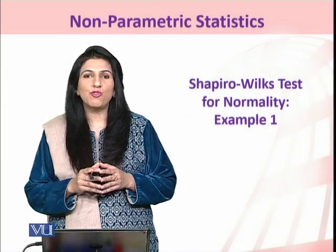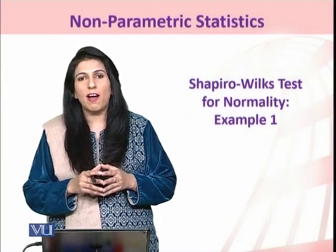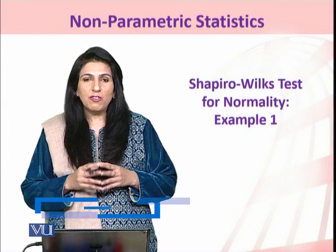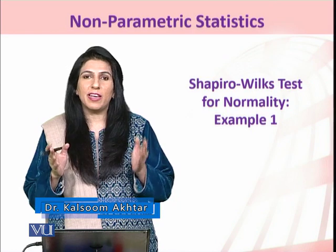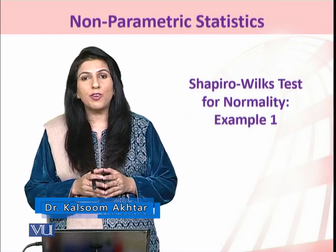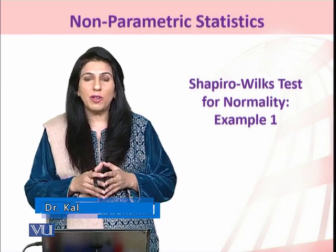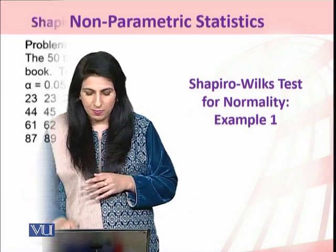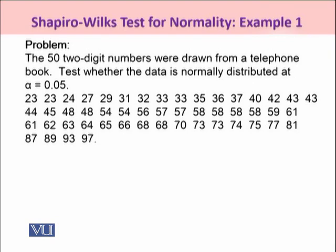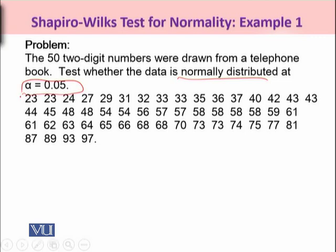The Shapiro-Wilk test may be used to test the normality of sample data. I will demonstrate how you can make use of this test to test the normality of data. The problem in hand is 52-digit numbers drawn from a telephone book. You are required to test whether the data is normally distributed at alpha 0.05.